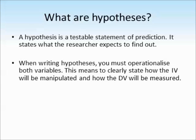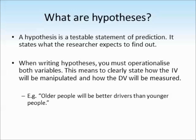When writing hypotheses, it's really important that you operationalise both of the variables. To operationalise — as you may remember from the variables tutorial — just means to clearly state how you're going to manipulate your independent variable and measure your dependent variable. Here's a really bad example of a hypothesis that hasn't been operationalised: 'Older people will be better drivers than younger people.' I haven't said what I mean by older or younger people, and we don't know what makes somebody a better driver.